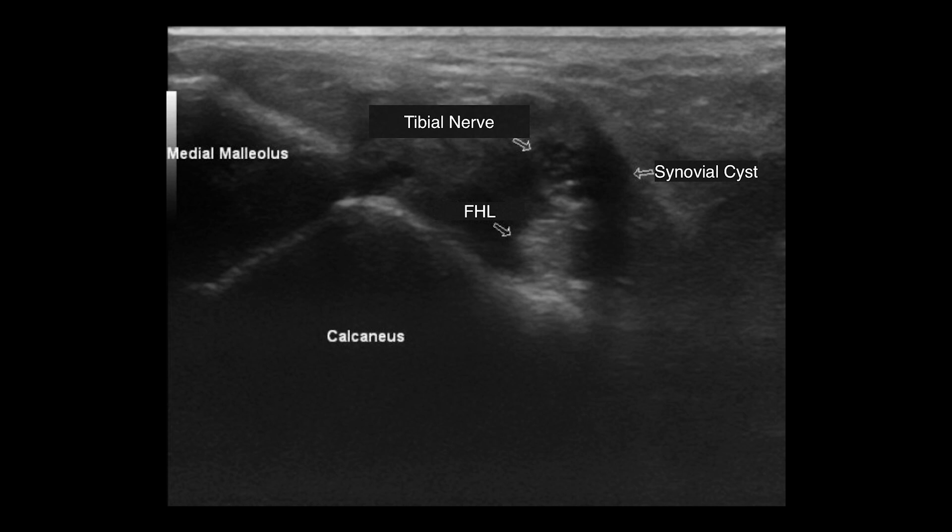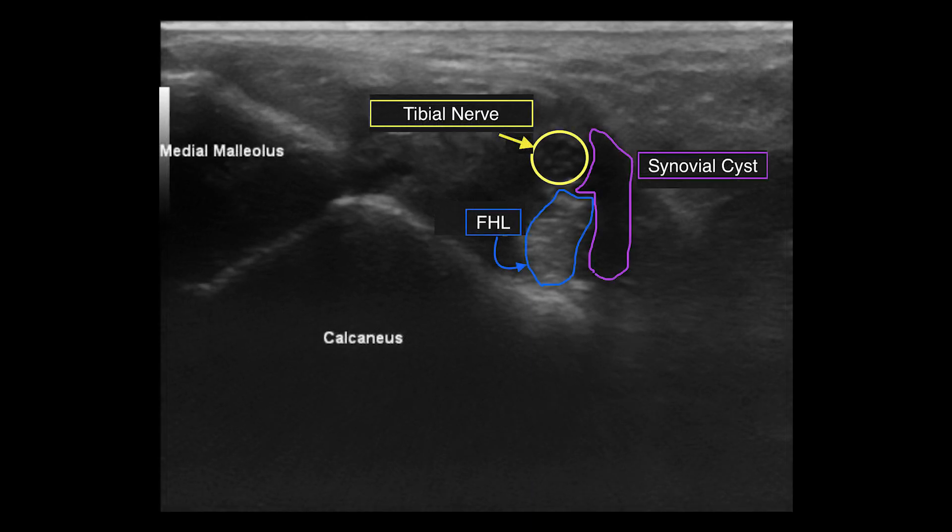Tarsal tunnel syndrome can be caused by any condition that causes compression to the tibial nerve or its branches as it passes through the tarsal tunnel. A wide variety of conditions can cause tarsal tunnel syndrome, including space-occupying lesions or masses which increase pressure in the tunnel — such lesions include lipomas, synovial or ganglion cysts, and tumors of the nerve sheath such as schwannomas. In this image you can see the tibial nerve with its classic honeycomb appearance, as well as the FHL and a synovial or ganglion cyst from the FHL that is causing compression around the tibial nerve, which can give signs and symptoms such as burning, numbness, and tingling in the plantar aspect of the foot.